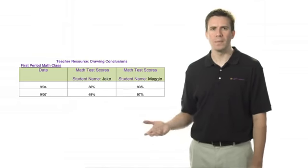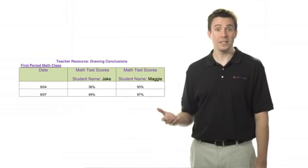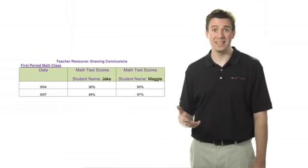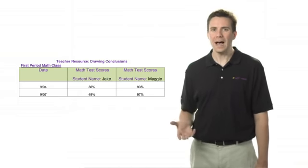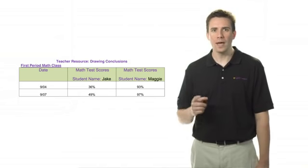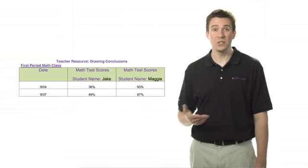So what are some conclusions you can reach about these students? Well, you might say that Maggie scores higher on math tests than Jake. Can you make conclusions about boys versus girls? Well, probably not. Since you only have one boy and one girl, your sample size is too small.